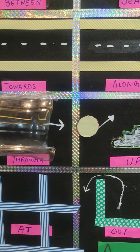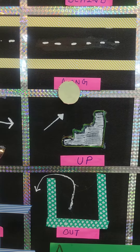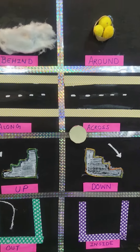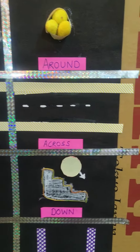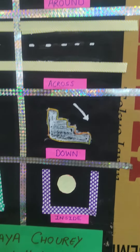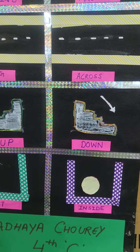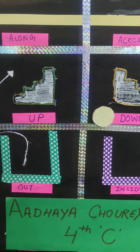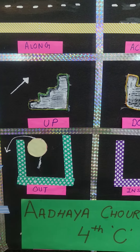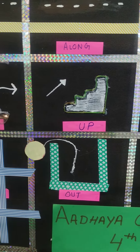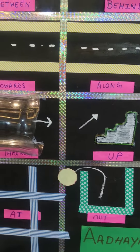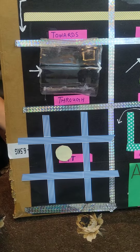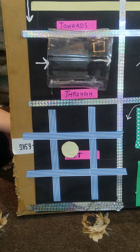Now he is moving up and then down. Then he reached inside a box, and then came outside the box. Finally, he reached at his home.